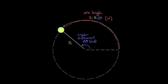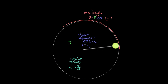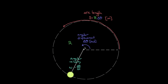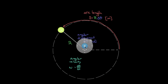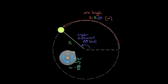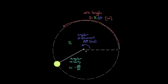The next relationship connects angular velocity to regular velocity. Angular velocity, represented by omega (ω), is the angular displacement per unit time — the rate at which something rotates through an angle. Obviously, the speed and angular velocity are related: the higher the angular velocity, the higher the speed. But what exactly is that relationship?